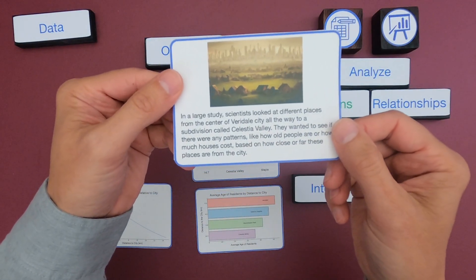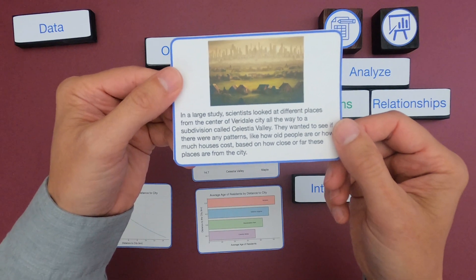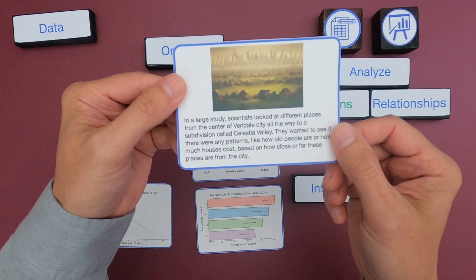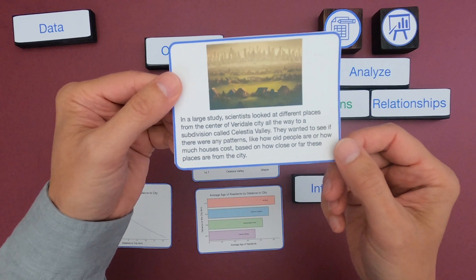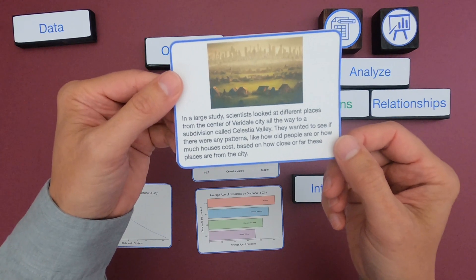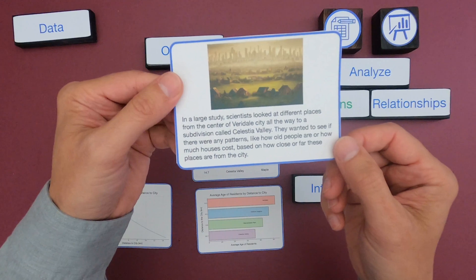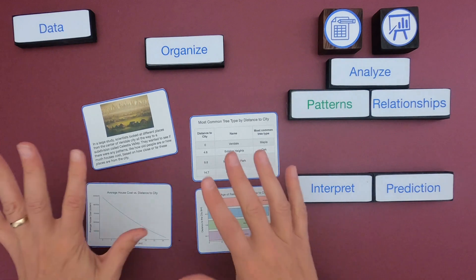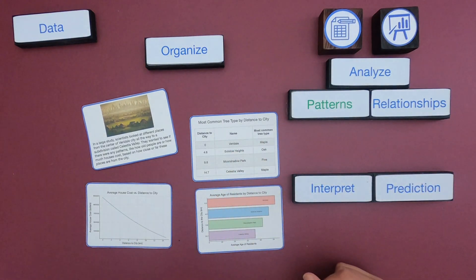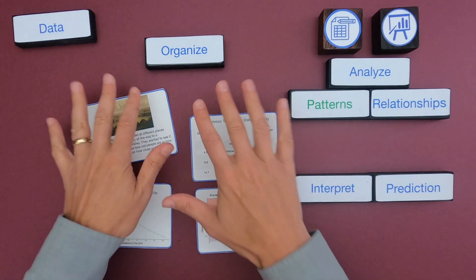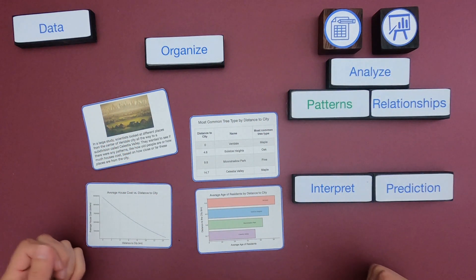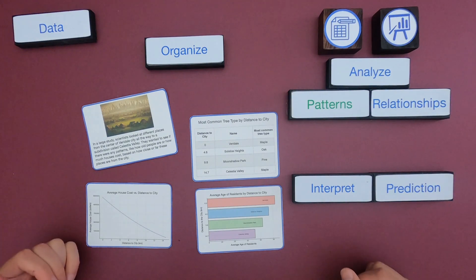For the next one, we have the results of a study on Varadale. In a large study, scientists looked at different places from the center of Varadale city all the way to the subdivision called Celestia Valley. They wanted to see if there were any patterns — like how old people are or how much houses cost — based on how close or far these places are from the city. I encourage you to look at the data, then identify it, organize it, analyze it, and interpret it, then unpause the video and we'll compare our analyses.